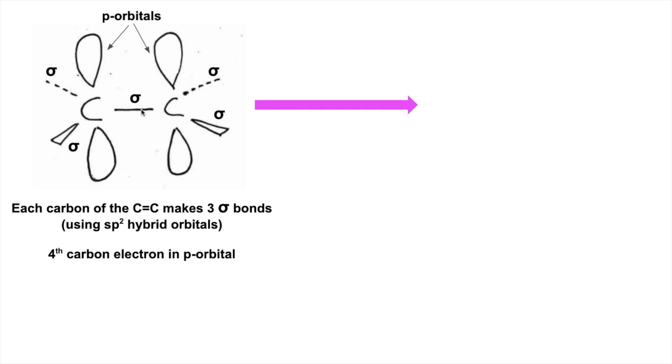Remember there's four electrons in the outer shell of carbon, so where is that fourth electron? It's in a p orbital.